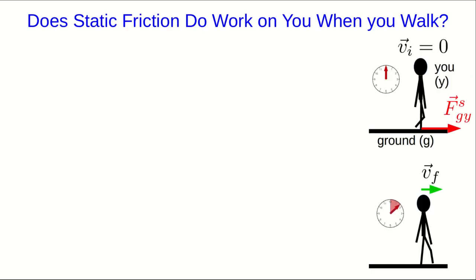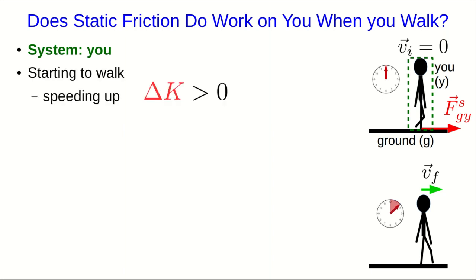So since it's okay to define a system where the agent of a static friction acting on the system is an external object, that means there's the potential for static friction to be able to do work on a system. Let's look at whether that happens when you walk. So I'm going to define the system as you. You're starting from rest and speeding up, and we know that you do that by pushing back on the floor, so the floor pushes forward on you. That's static friction. And you are gaining kinetic energy, and what is the source of that gain in energy?